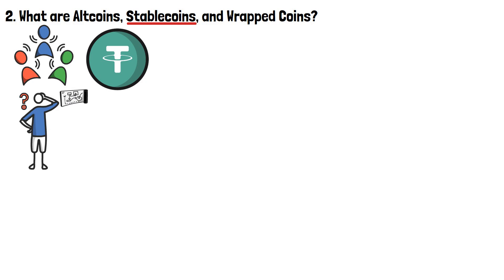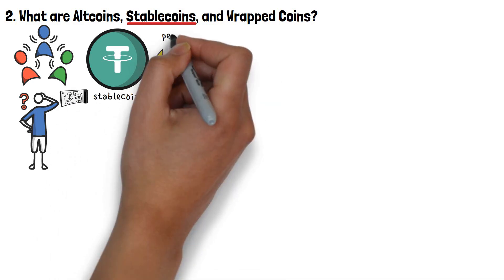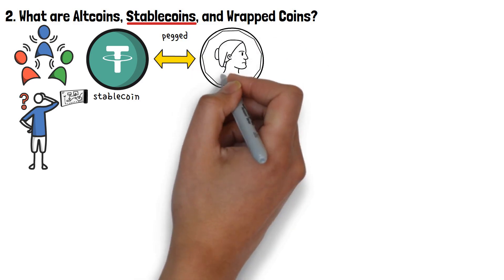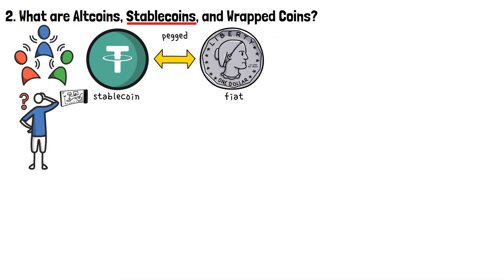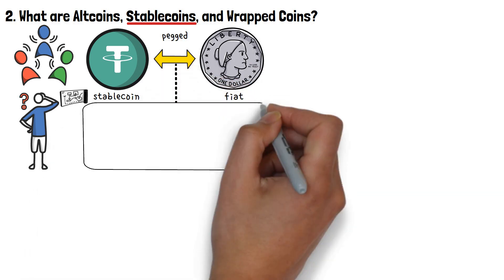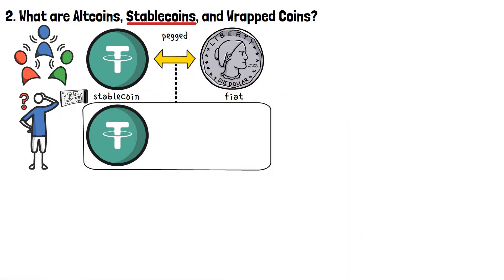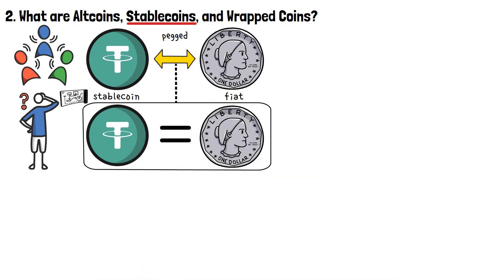So how do stablecoins work? Well, a stablecoin is a cryptocurrency asset that is pegged to a fiat or governmental currency. In most cases, this will be the United States dollar. Here, pegged means that the value of a single stablecoin is tied to the dollar. One stablecoin will, theoretically, always be worth one dollar, or one unit of the currency that it's pegged to.